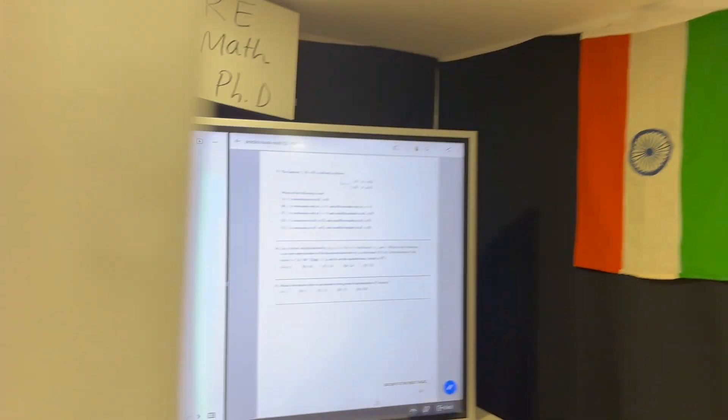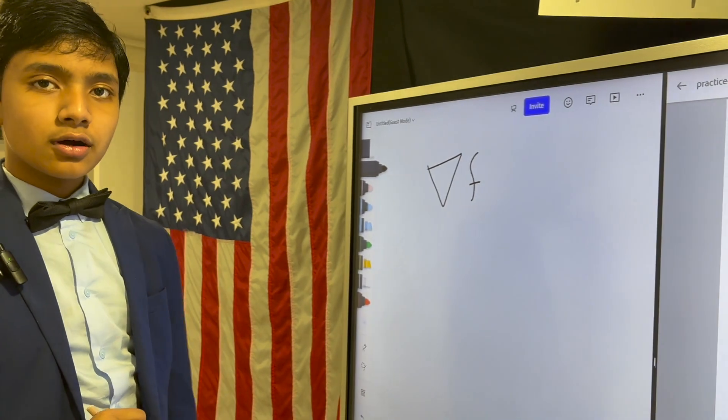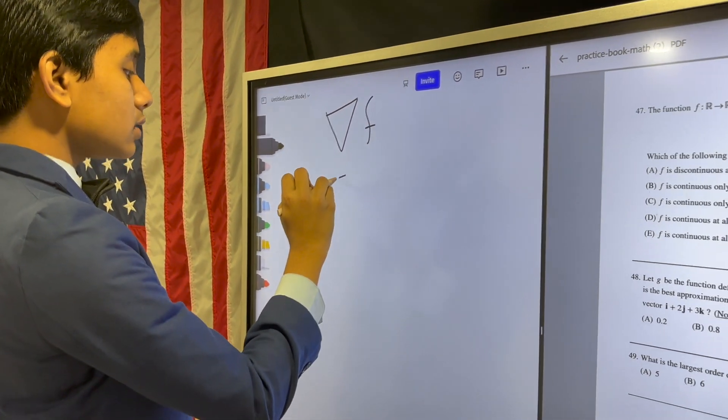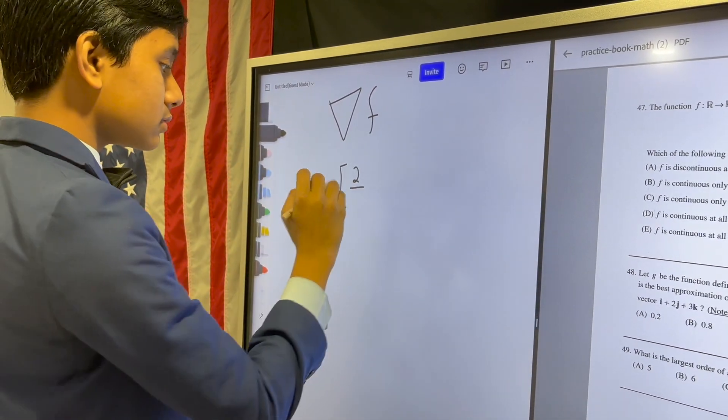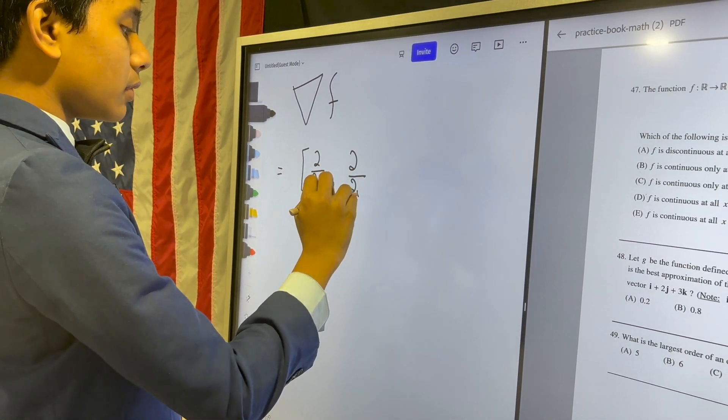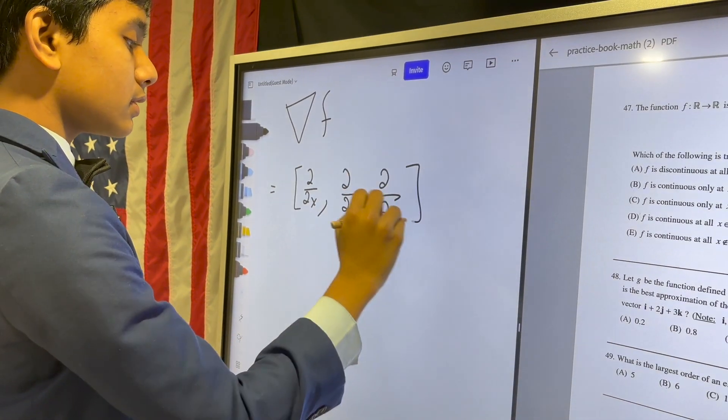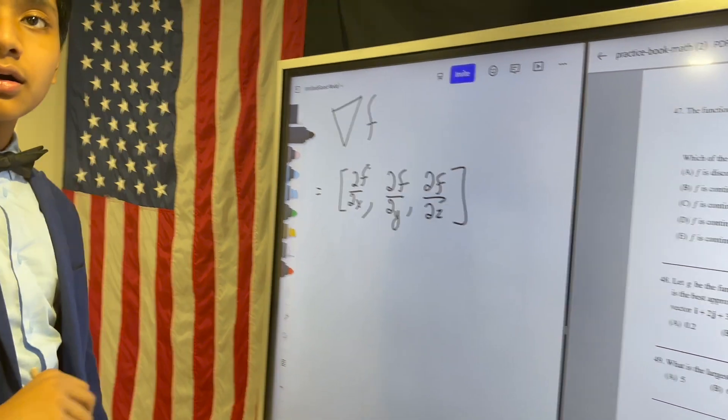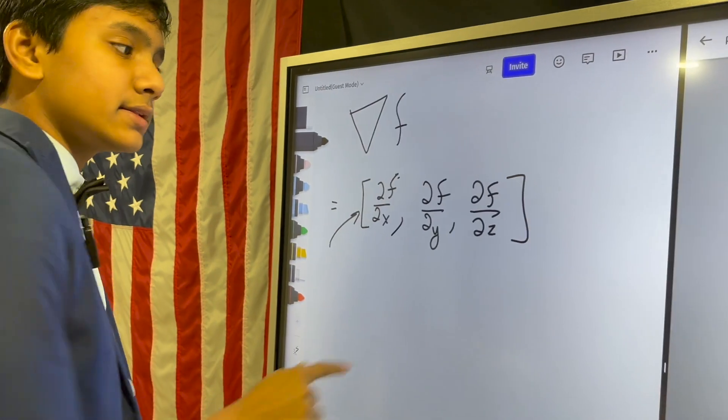First, we have to find the gradient. So what is the gradient? Well, it's actually this dot product. So you have ∂/∂x, ∂/∂y, ∂/∂z, and then f over here, f over here, f over here. So this is what the gradient looks like.